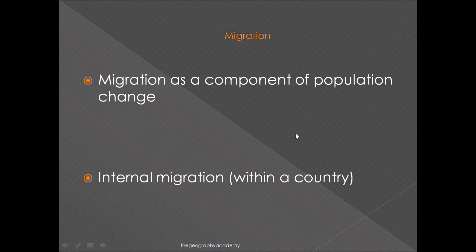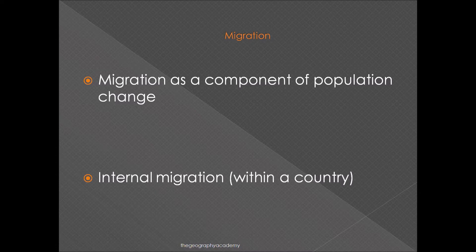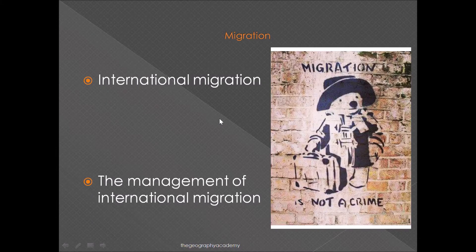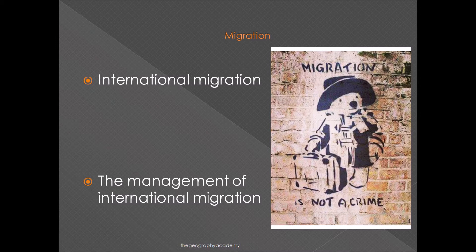For migration, you'll look at the reasons why people move, beginning with internal migration — what happens within a country, such as someone moving from a rural area to an urban area or from one city to another due to lack of universities or jobs — and the impacts on both the area people are leaving and the area receiving them. You'll then look at international migration, one of the biggest topics in the news right now, covering the differences between voluntary and forced migration, and one particular case study on the management of international migration, alongside general global patterns of migration.